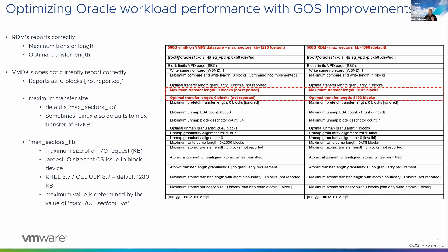I heard you were also tasked with an investigation around what the in-guest operating system is seeing and reporting as we look at the IO stack. There were some inconsistencies that had been reported on occasion. When people used to use RDM, the page table reported from the underlying storage stack — the maximum transfer length and the optimal transfer length — used to get reported correctly. For example, running a Pure Storage X50, the maximum IO size is four megabytes. You can see in the right-hand column that's an RDM, and when you run the sg_readcap command, the maximum transfer length and optimal transfer length are set to 8192 blocks, which means four megabytes. Unfortunately, those two parameters were not reported correctly for VMFS or VMDK — they showed as zero blocks or not reported.